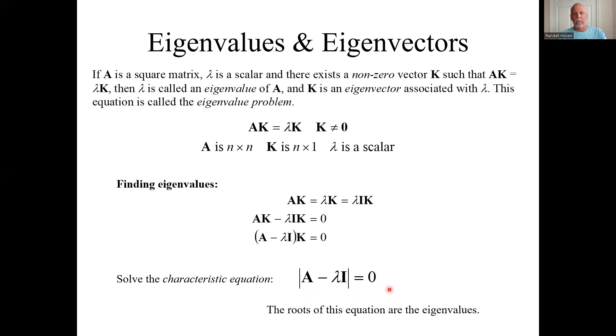And so this is then called the characteristic equation. And it's how we find the eigenvalues, the lambdas. The lambdas are called the eigenvalues. The K's are called the eigenvectors. Here's how we find the eigenvalues.